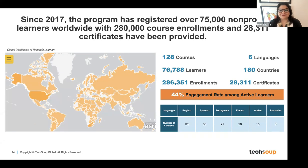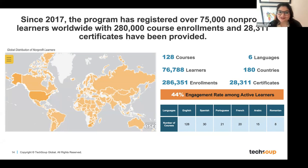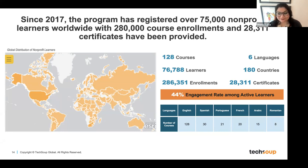We offer our courses in six languages. Over the last two years, we've done a lot of translations. We have 128 courses in English, 30 in Spanish, 21 in Portuguese, 20 in French, 15 in Arabic — we're very excited, we released our Arabic courses last year — and eight courses in Romanian.